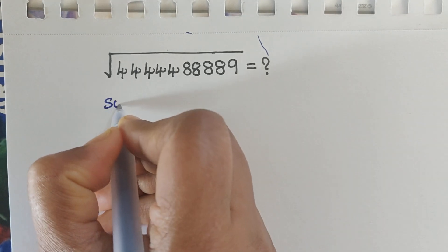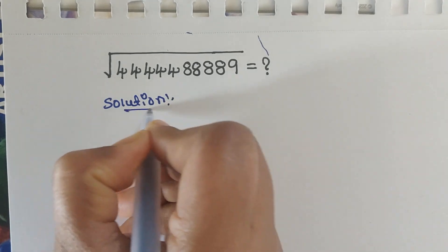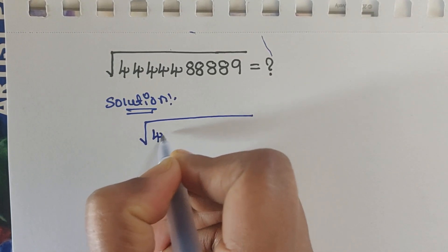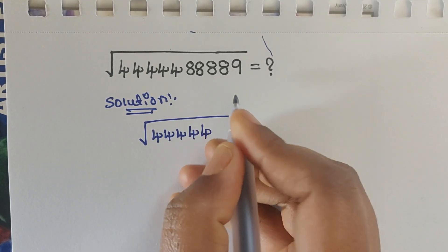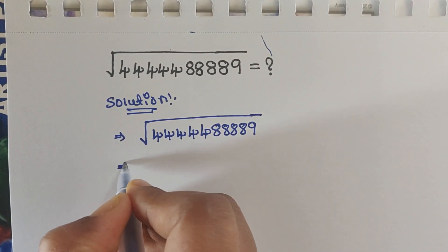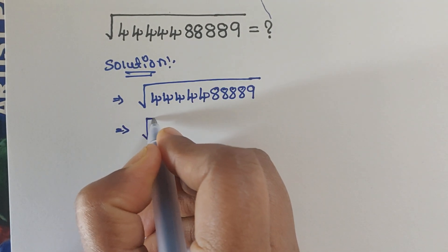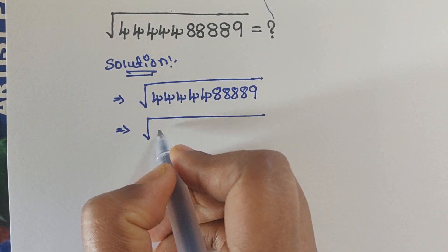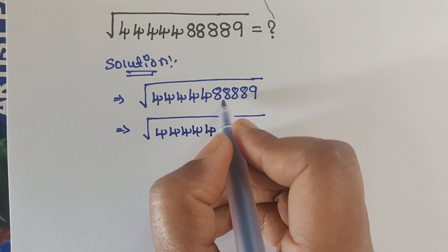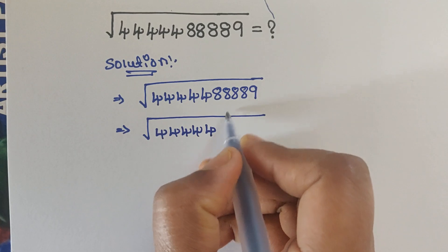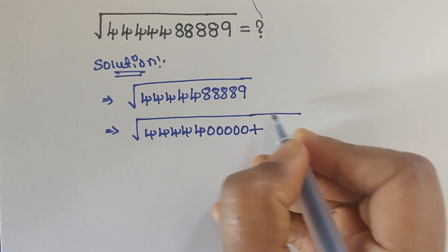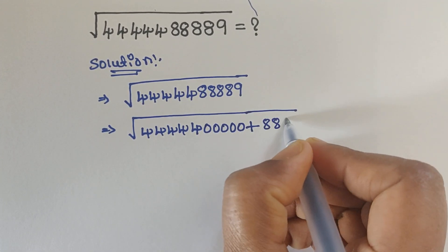Solution. So we have given the square root of 5 fourths, 4 eighths, 9. We can write this number as: 0, 0, 0, 0, 5, 0 plus the term 8, 8, 8, 8, 9.